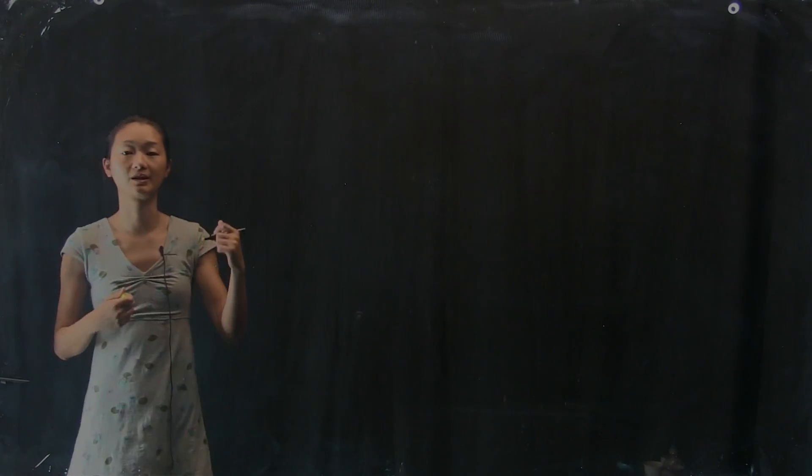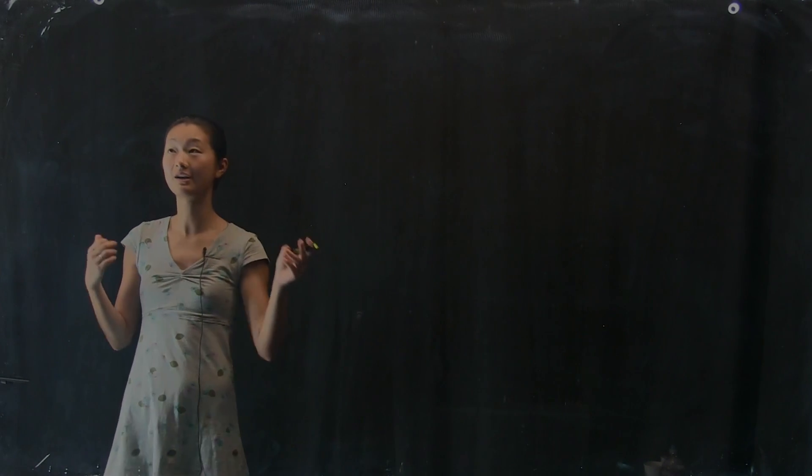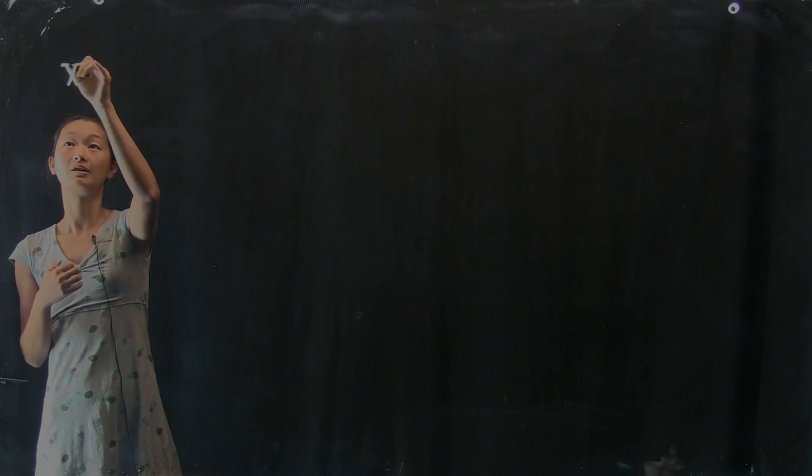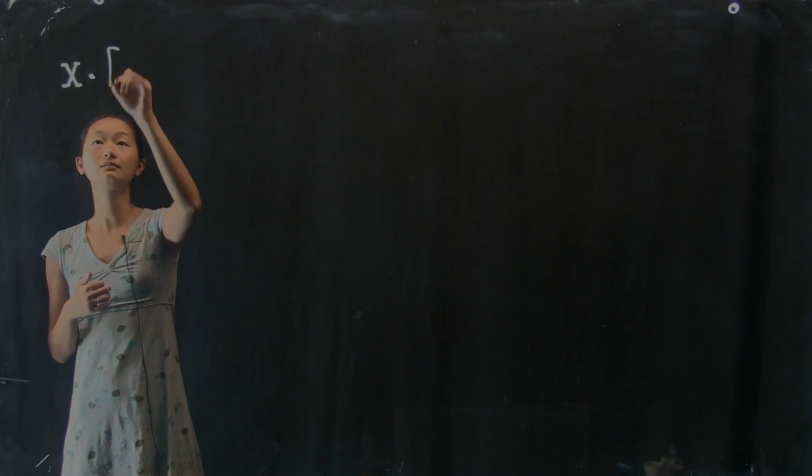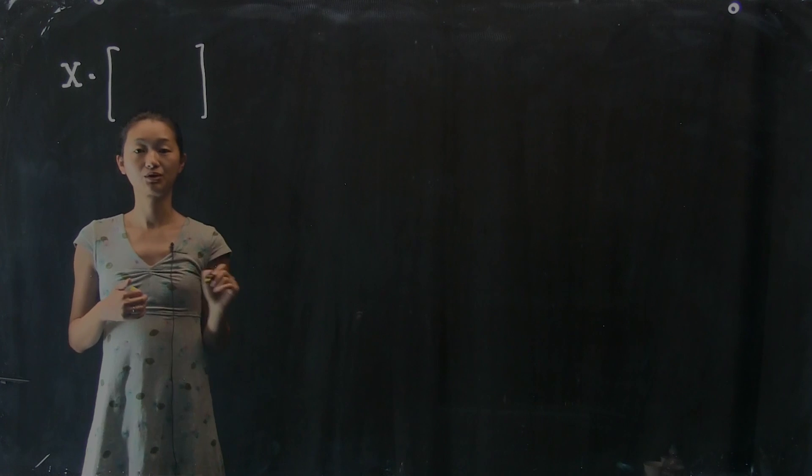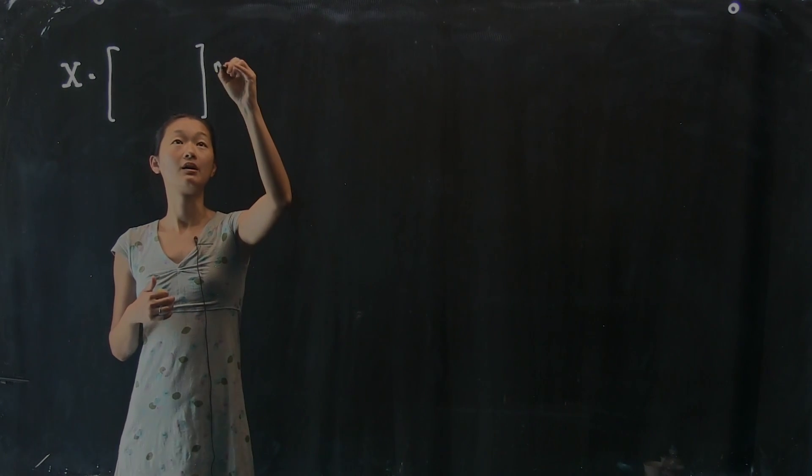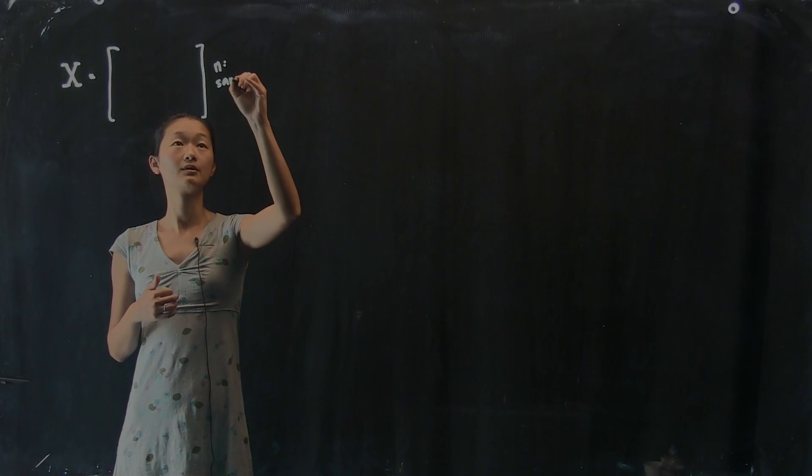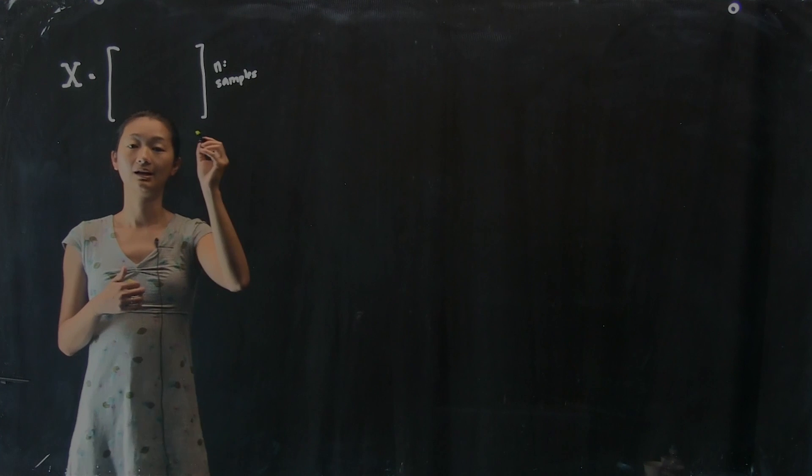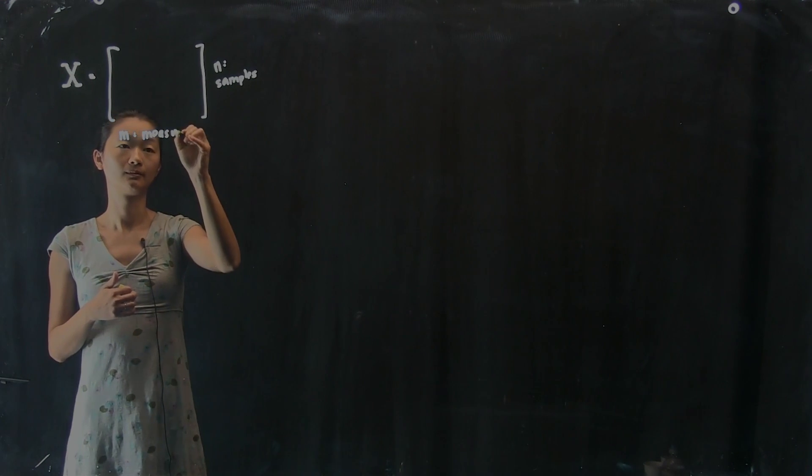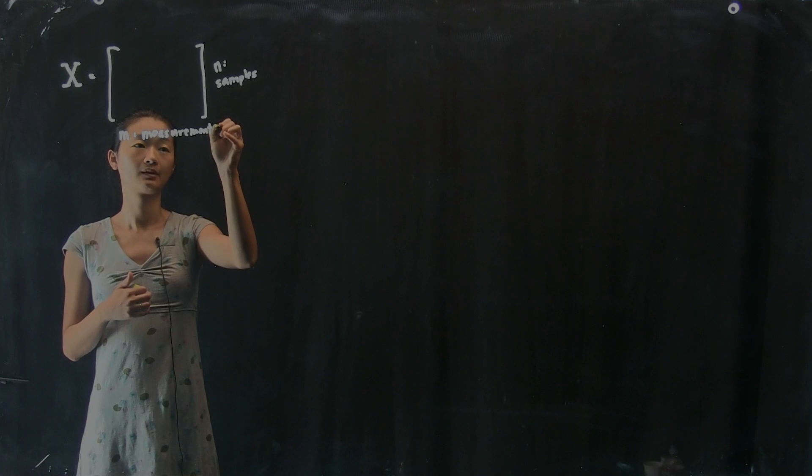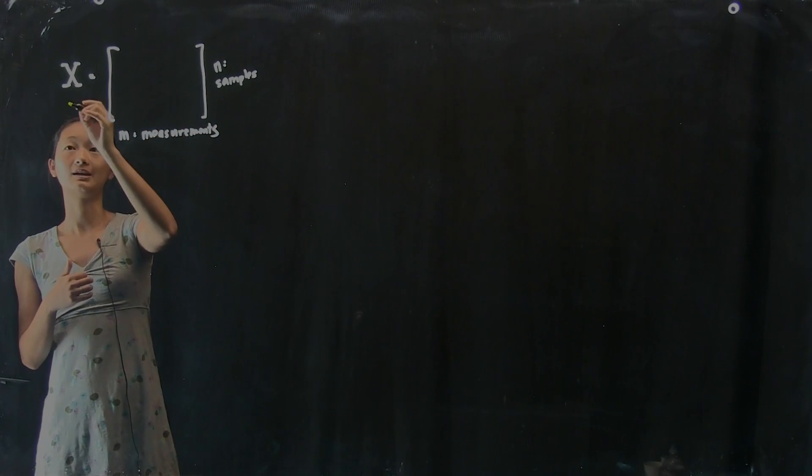So to remind ourselves of the kind of big high dimensional data we're talking about, we have our data matrix X, which is a matrix of data where there are n samples and m measurements. So we have an n by m data matrix.